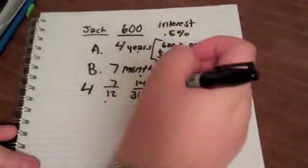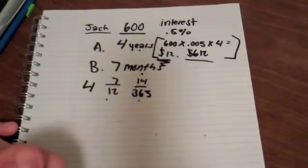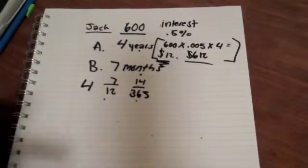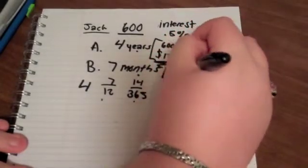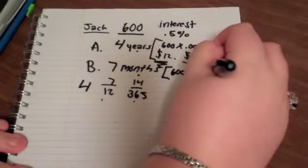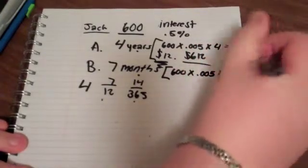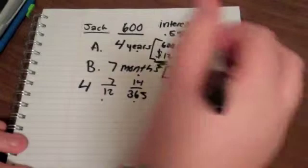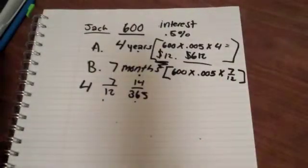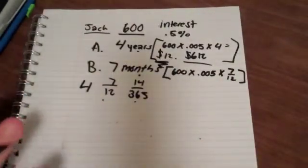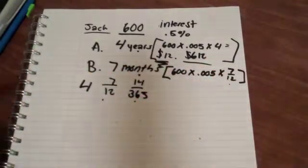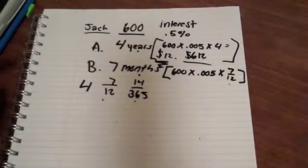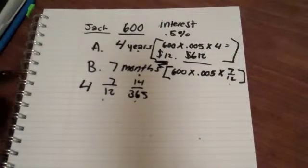I'm going to go talk about it right now because I want to. This would be 600 times 0.005 times 7 over 12. Now however your calculator does it, like I have a TI-84, Texas Awesome Instrument thing, whatever. So with this I just put in parentheses. So I have 600 times 0.005 times parentheses 7 divided by 12, close parentheses.